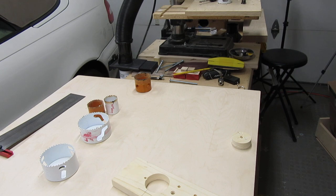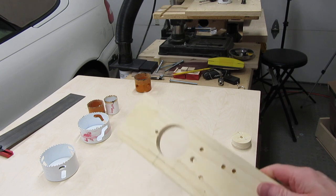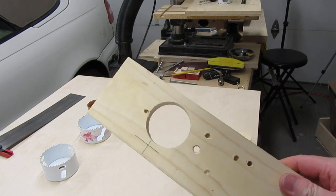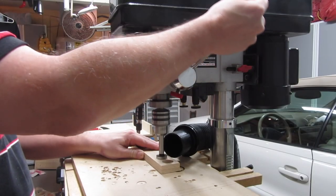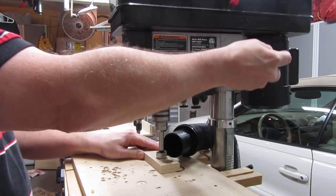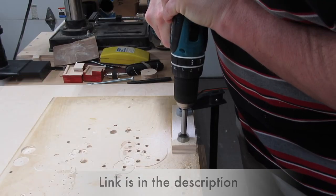Hole saws are useful when you need to cut large holes, usually an inch or more, all the way through wood. Some hole saws can also cut metal, but I'm only covering wood in this video. Forstner bits are also useful for drilling large holes. For more information, see my Newbie Tooltip video on them.